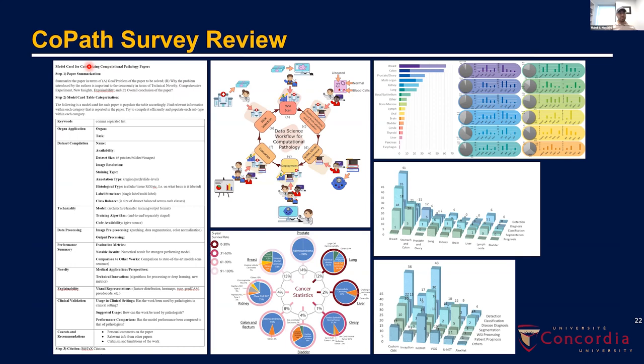One of the highlights of the paper concerns model cards, suggested by Google and University of Toronto for AI research. A model card contains high-level information about what data was used, what models are used, and the applications. We innovated our own model card specifically for computational pathology, which includes medicinal aspects, statistics reports, and information about available data. You might want to take a look.